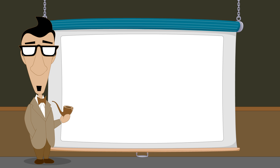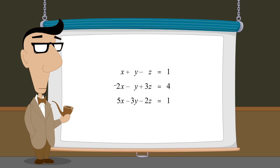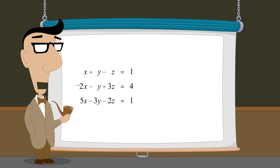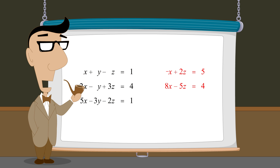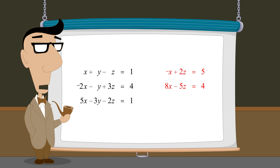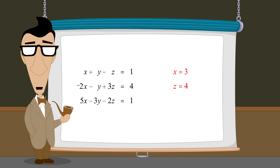We can see from this example that solving a system of three equations in three variables involves more steps than solving a system of two equations in two variables. However, the basic techniques are the same. We start by choosing two of the three equations and eliminate a variable, giving us an equation in two variables. We then repeat this process with a different pair of equations, giving us a second equation in the same two variables. We can then use substitution or elimination to solve this system of two equations in two variables to find the values of those two variables. And once we know the values of two of the variables, we can substitute those values back into any of the original equations to find the value of the third variable.